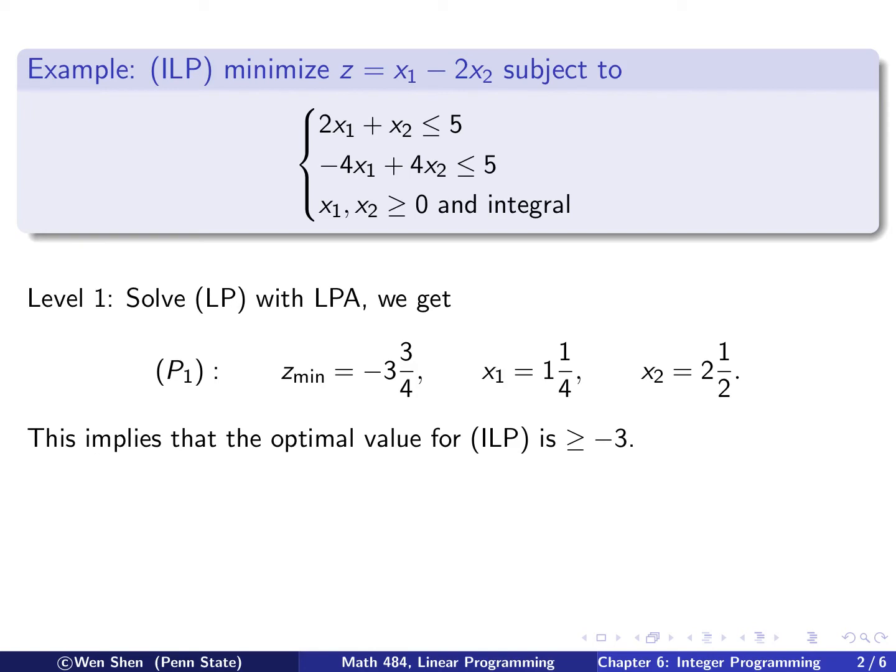And we see that these are not integral. So we're not done yet. And also we see that the minimum of z is this value. So this is without the constraint of integral. So that means if this constraint shall be put on, then the minimum value would be at least bigger than negative three.